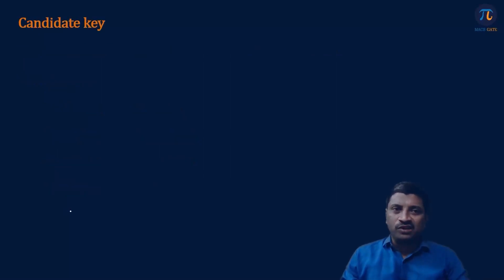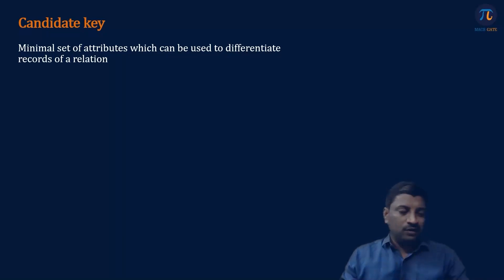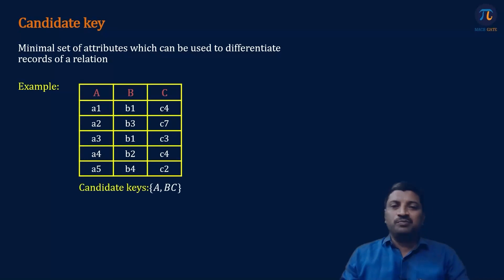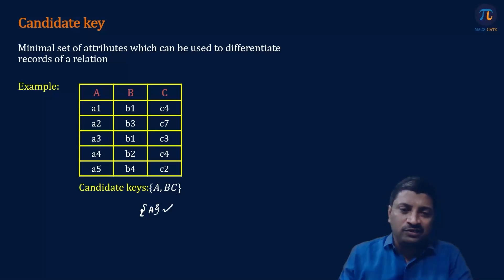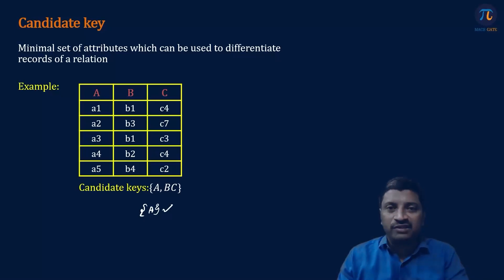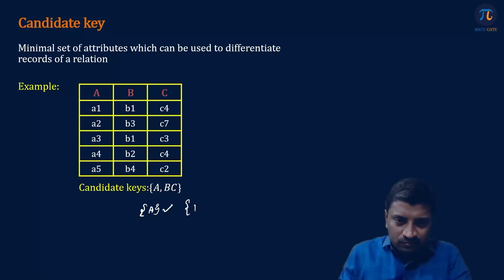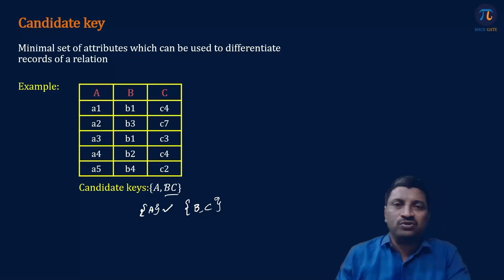The first one is candidate key. A candidate key is a minimal set of attributes which can be used to differentiate the records of a relation uniquely. For example, suppose we have a relation with three attributes A, B, C. The set with attribute A is a candidate key because the values are A1, A2, A3, A4, A5 — all distinct. So attribute A can uniquely identify the records. Also, the attribute set {B, C} is also a candidate key.